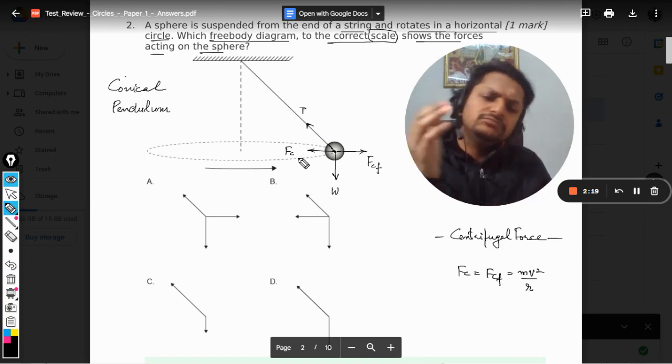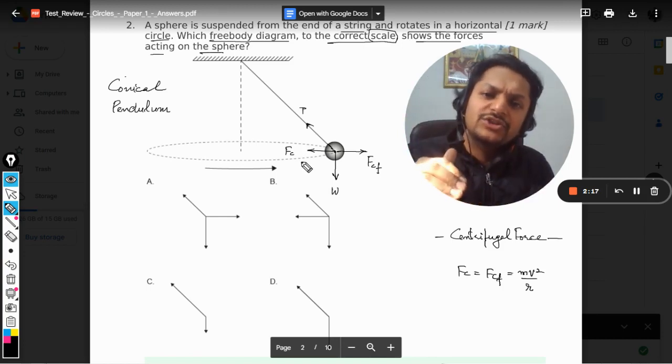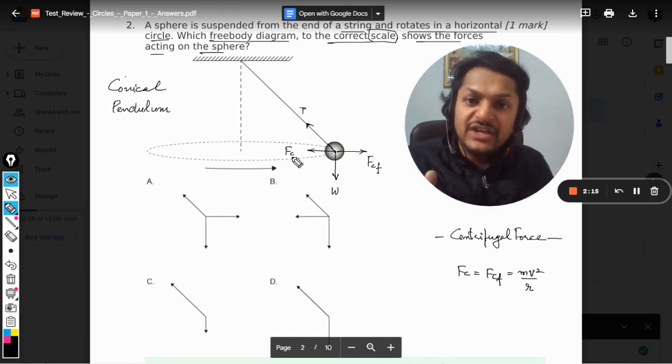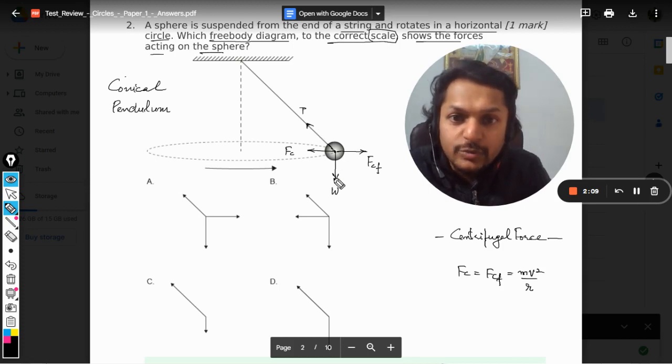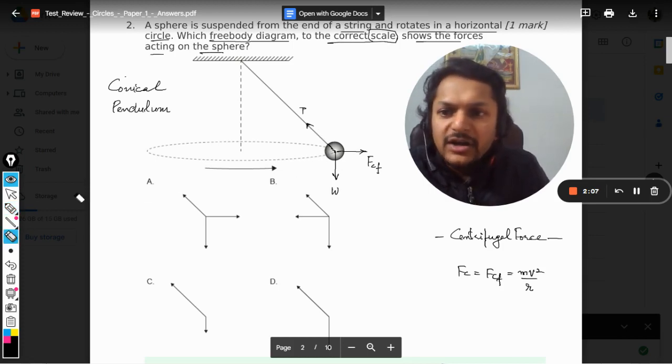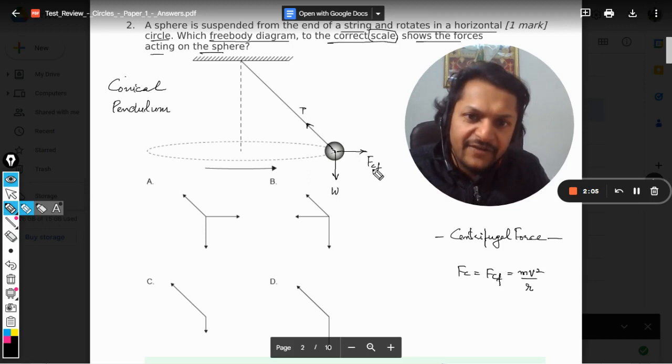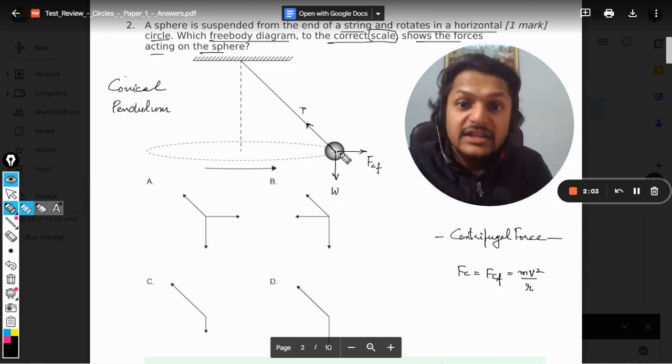Now instead of trying to understand this question from the point of view of FC, let us go for FCF. Now you see, if there is an equilibrium, it means the tension force T has to be equal to the resultant force of FCF and W, isn't it?